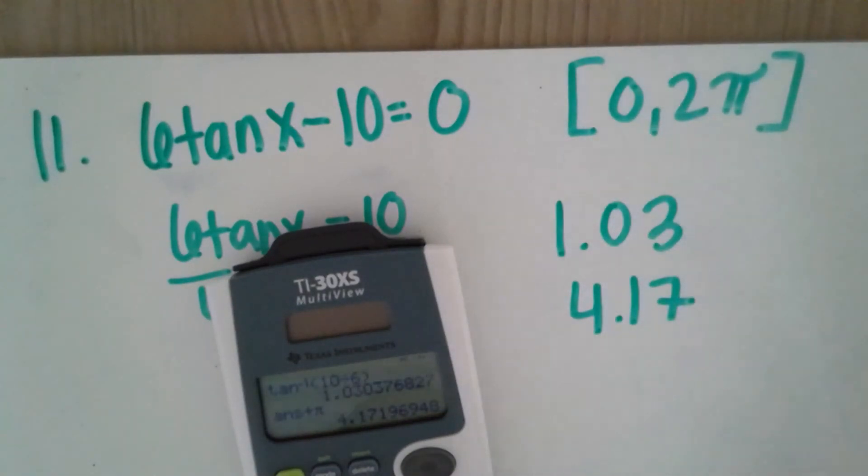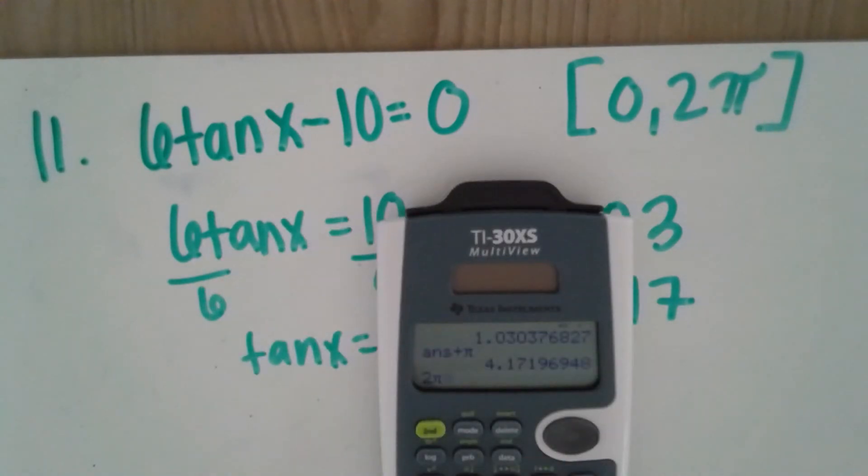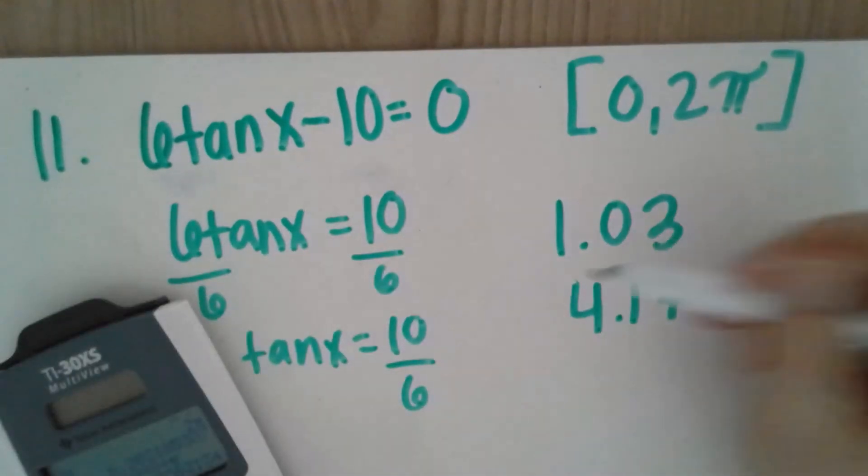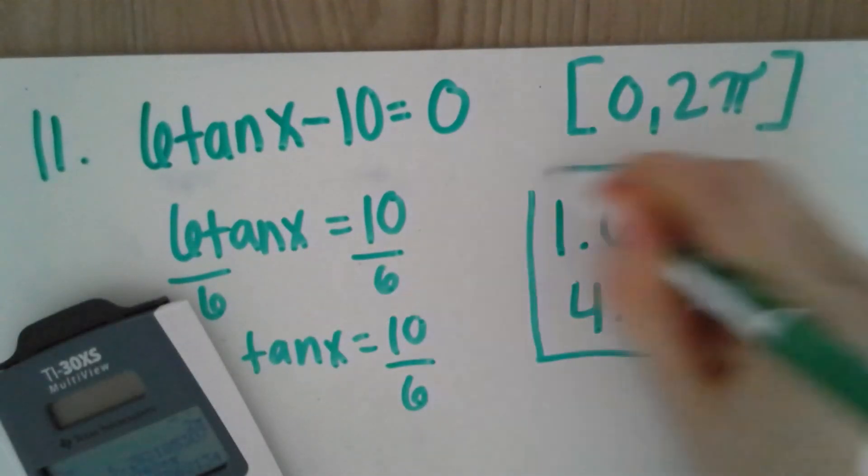We could keep adding π, but note that if we type in 2π into our calculator, that number is 6.283. So if we add π to 4.17, we end up getting 7.3, which will be outside of our interval. So this will be our two answers.